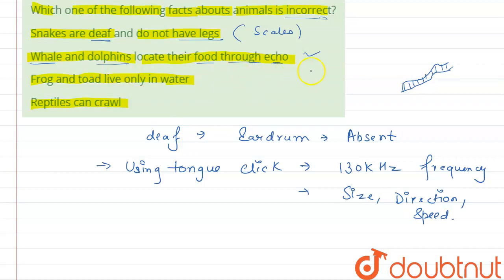So whales and dolphins locate their food through echo. Next is frogs and toads live only in water. So we have our incorrect option guys. Why? Because frogs and toads are amphibians, they live on land also. So this option is incorrect.